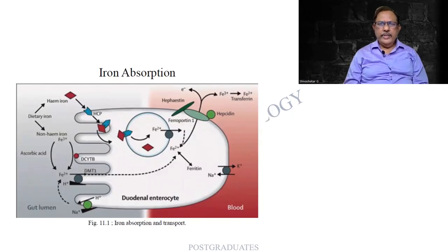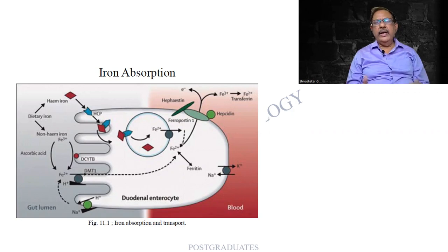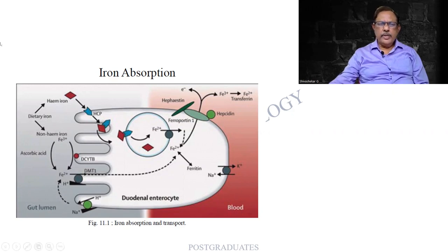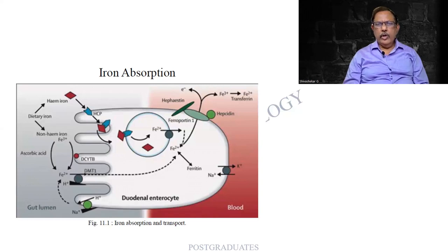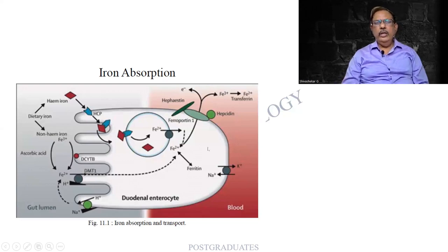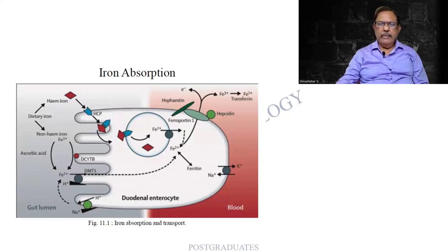Now I am starting with iron deficiency anemia. The question could run: define anemia, classify anemia, and then iron deficiency anemia. The absorption of iron, which you would have read in biochemistry — go back to the text. What is the ferrous and ferric form, the heme and non-heme form, how it is absorbed in the duodenum, the role of hepcidin, and the mucosal block theory — briefly mention in two to three lines.